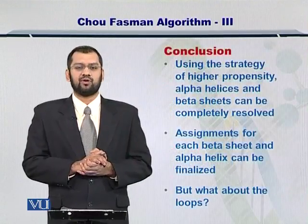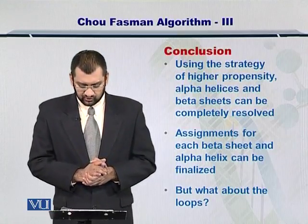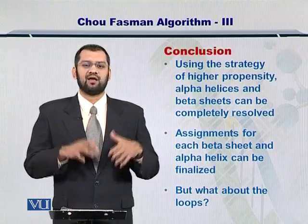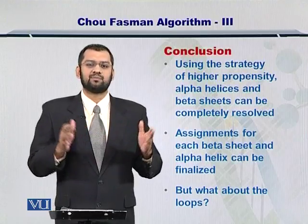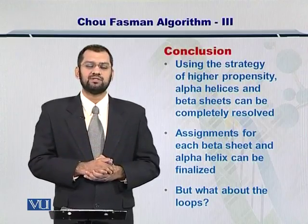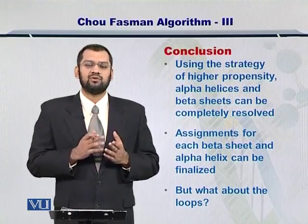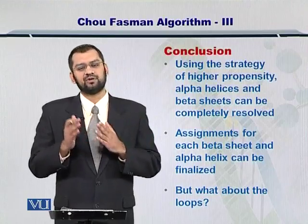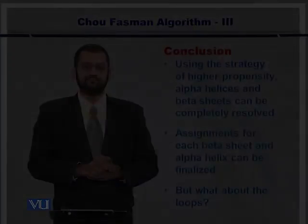These two points are very important towards finalizing the beta sheets. Using the strategy of higher propensity for alpha helices and beta sheets and the average propensity towards finalizing them, you can classify major portions in your sequence into the secondary structures which they can form. Next, what about loops and turns? Besides alpha helices and beta sheets, there are loops and turns as well, and you need to predict them properly too. For example,